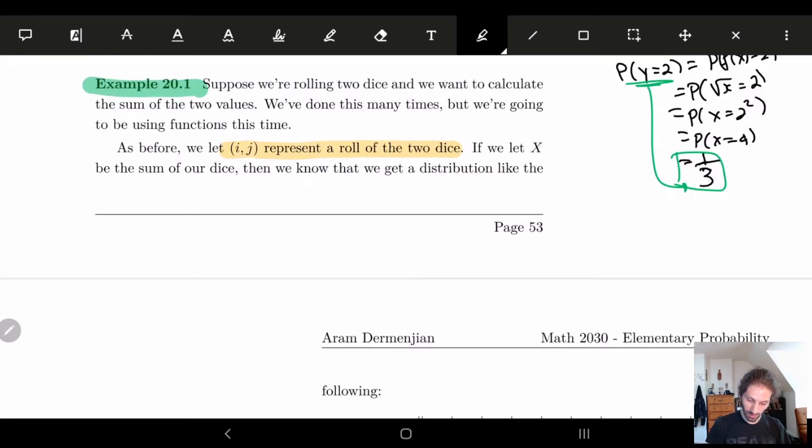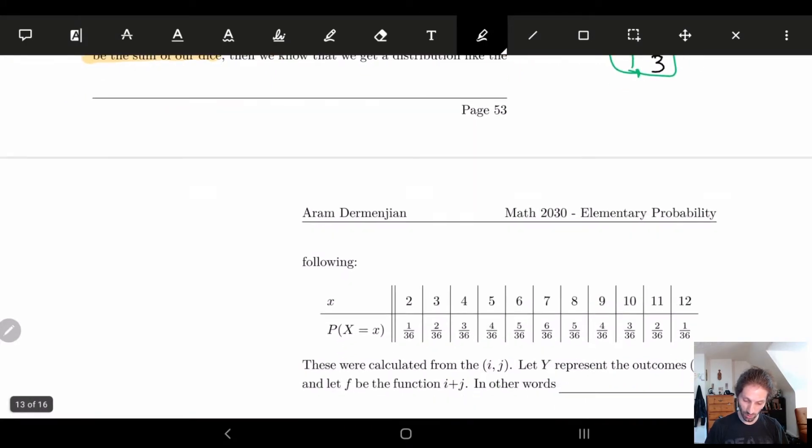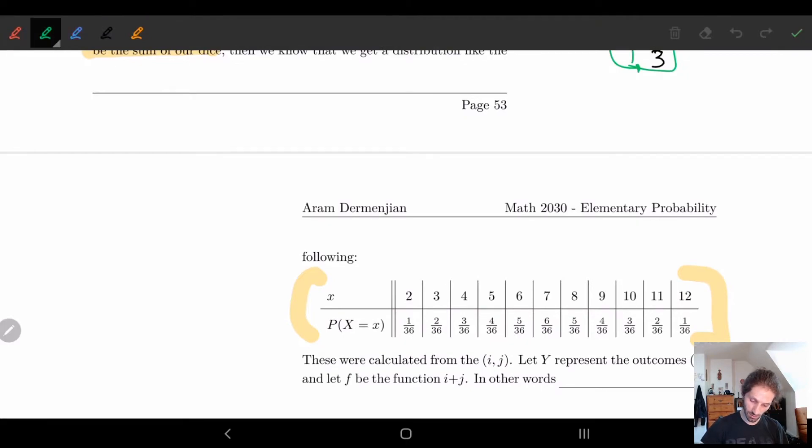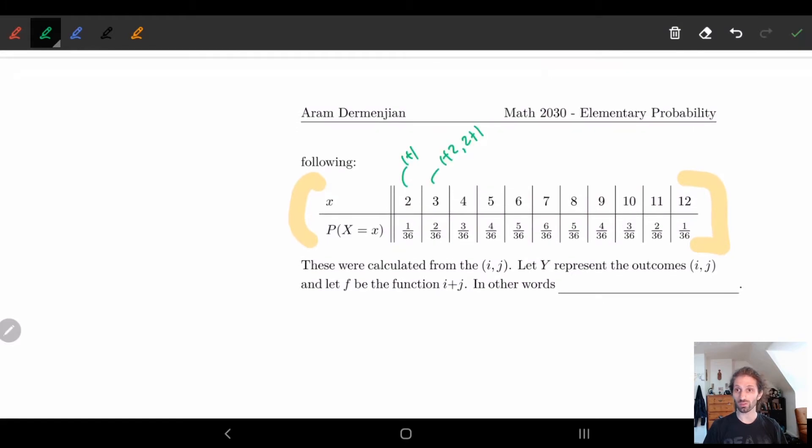So if we let X be the sum of our dice, we already know what the distribution we're going to get, right? So we know that the distribution is given by this. So remember this is, like for example, 1 plus 1. This is 1 plus 2 and 2 plus 1. That's why it's 2 over 36. So this gives us a distribution.